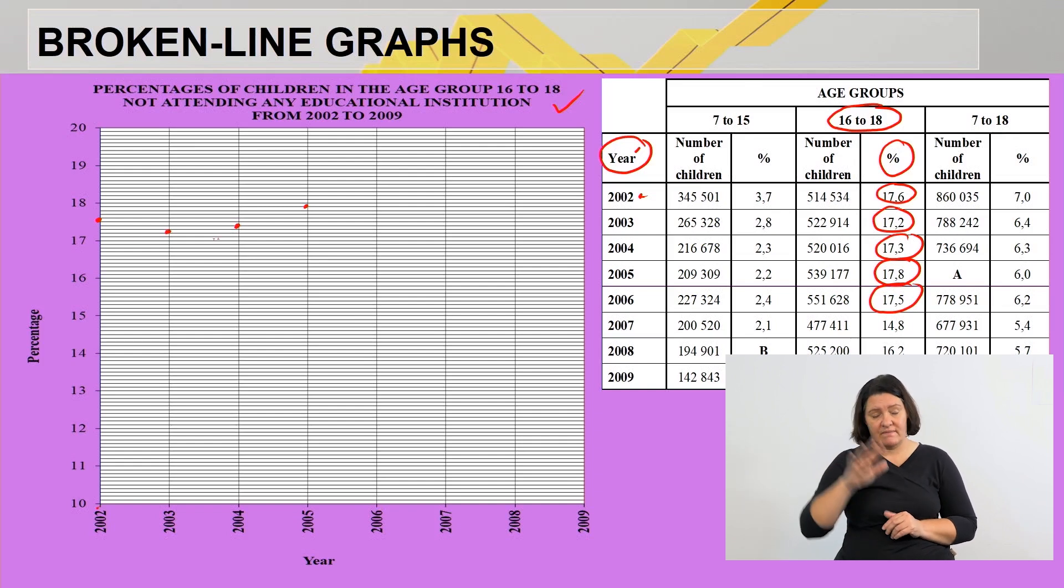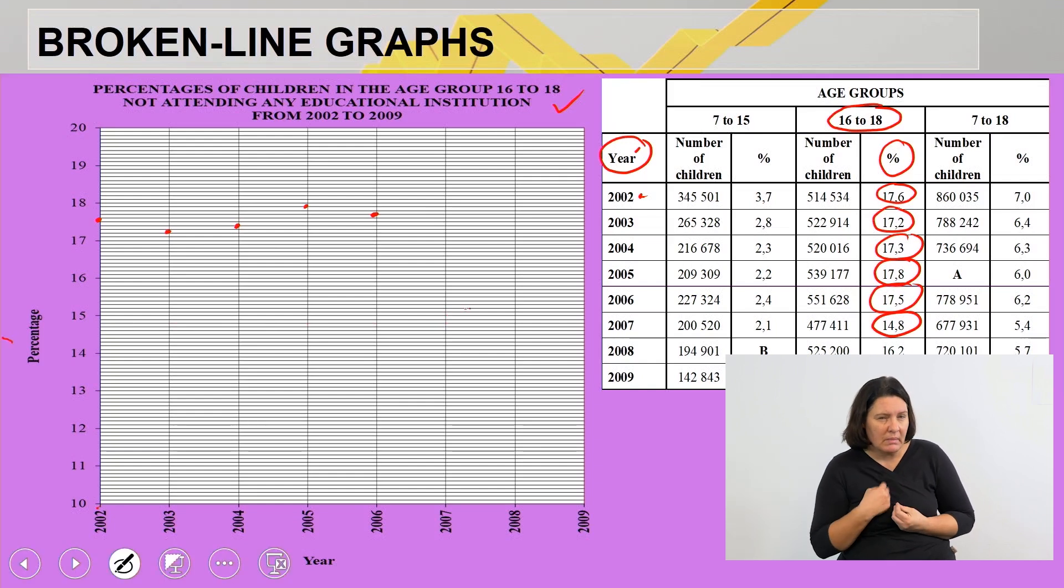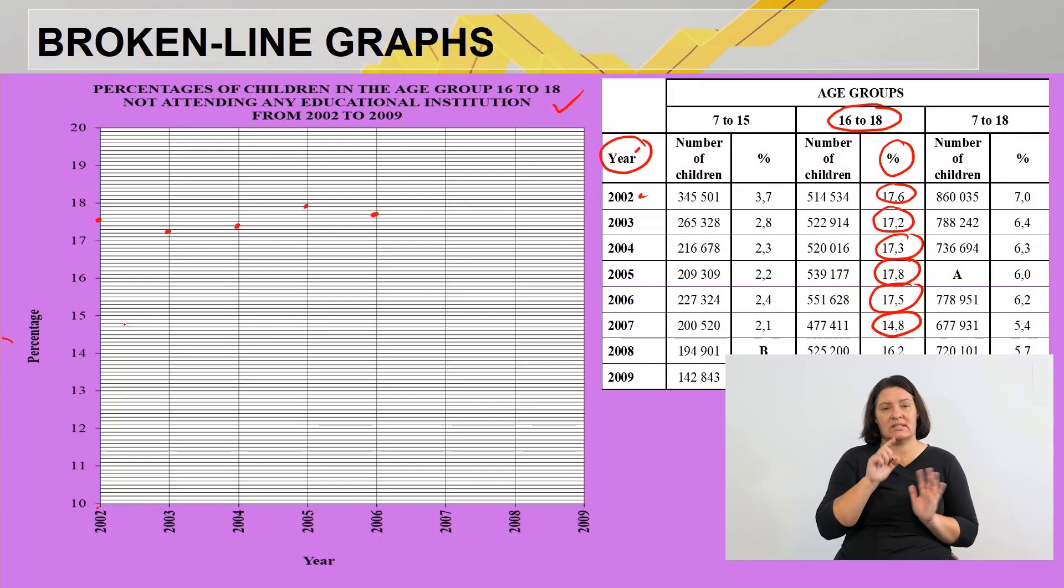Then 2006 it was 17.5. 2006 is here, we go to 17.5, so there's 17.5: 1, 2, 3, 4, 5. Then in 2007 it was 14.8. So now I go down, there's 14, 14.8 will be just below, so I move all the way down. I'm at 2007, so that will give us that one there.